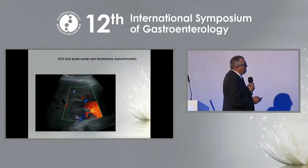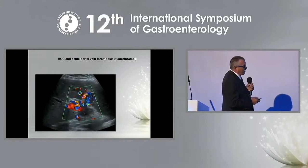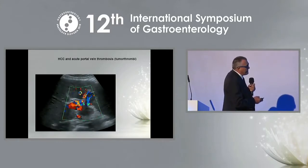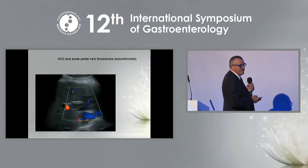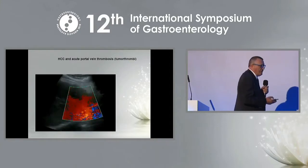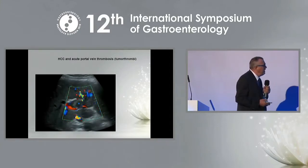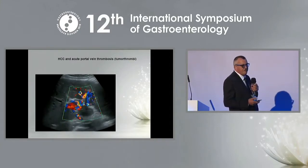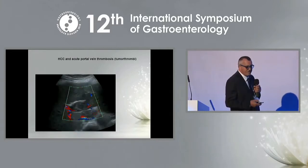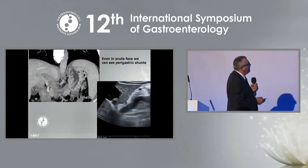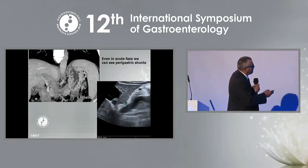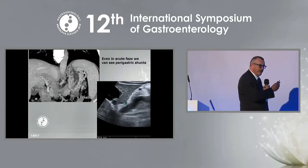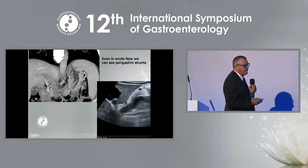Quite often we encounter so-called tumor thrombi, where blood flow is detected within the thrombus itself. These are very often associated with hepatocellular carcinoma. Here is an example showing extension of thrombus throughout the entire portal vein system, though the anatomical structure of the portal veins can still be recognized.